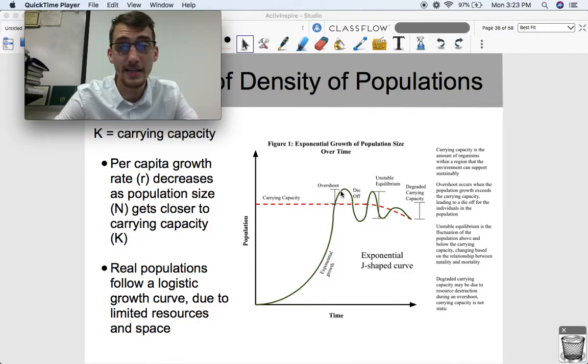So we exceed carrying capacity. The environment can't sustain this many organisms, this many individuals in the population, so there's a die-off. And then now that we're back under carrying capacity, we're going back up and going back down, and that will eventually level out to the carrying capacity.